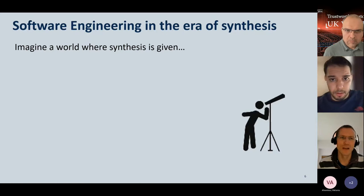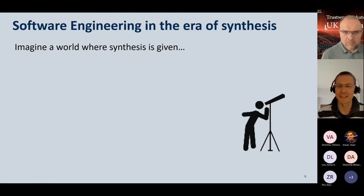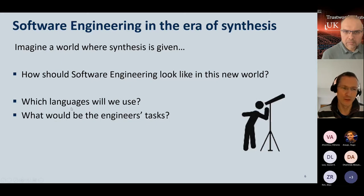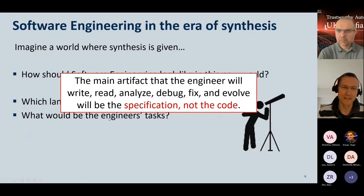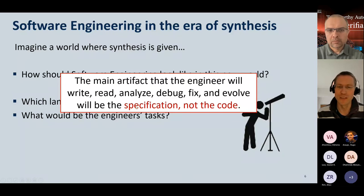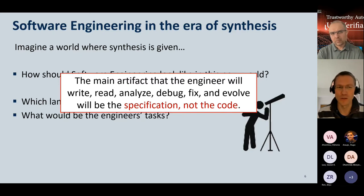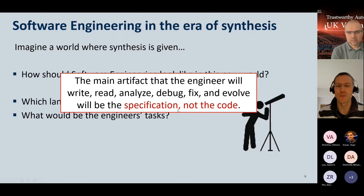Our focus was on the software engineering aspects in this new era of synthesis. We take synthesis as a given and ask: what would software engineering look like in a world where synthesis is given? What languages would we use — no longer programming languages — and what would engineers' tasks be? The main artifacts that engineers write, read, analyze, debug, fix, and evolve will be specifications, not code. Over many decades we have developed tools to work with code, but not so much for specifications — and this is the gap this project is trying to fill.